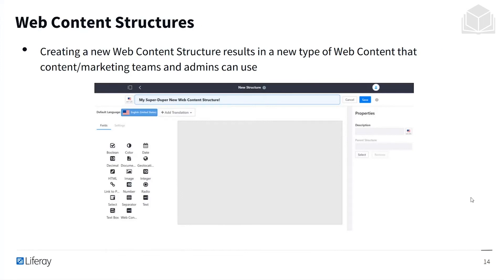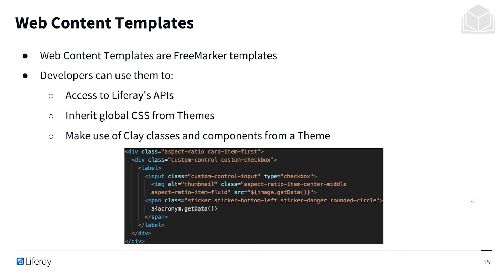Creating a new web content structure results in a new type of web content that content, marketing teams, and admins can use. For example, we might publish a virtual e-magazine with articles as structured content. We might want to store the text and images of an article, and instead of uploading these as individual web content items, we can create a structure to encapsulate all of those things. Web content templates then present and display that data in a consistent way.